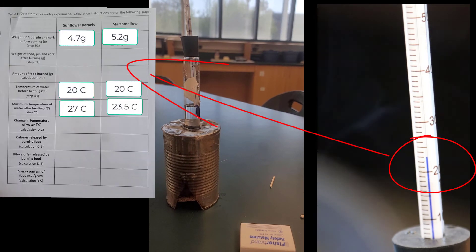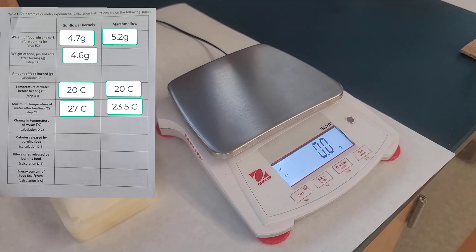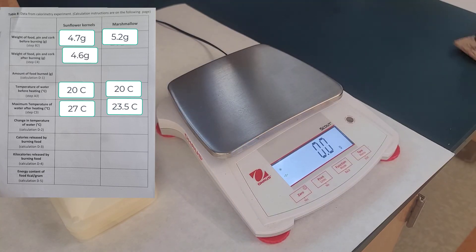Then what you're going to do is, once again after it's all cooled off, take the can off, go take your marshmallow, and weigh it. That difference represents how much you burned of that marshmallow.